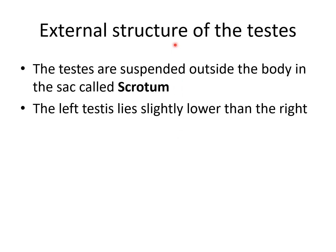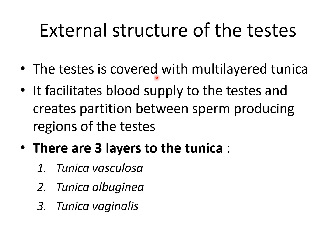About the external structure: the testis are suspended outside the body in a sac called the scrotum. The left testicle lies slightly lower than the right one. The testis is covered with a multi-layered tunica, which has three layers: tunica vasculosa, tunica albuginea, and tunica vaginalis. These layers facilitate blood supply to the testis and create partitions between the sperm-producing regions of the testis.